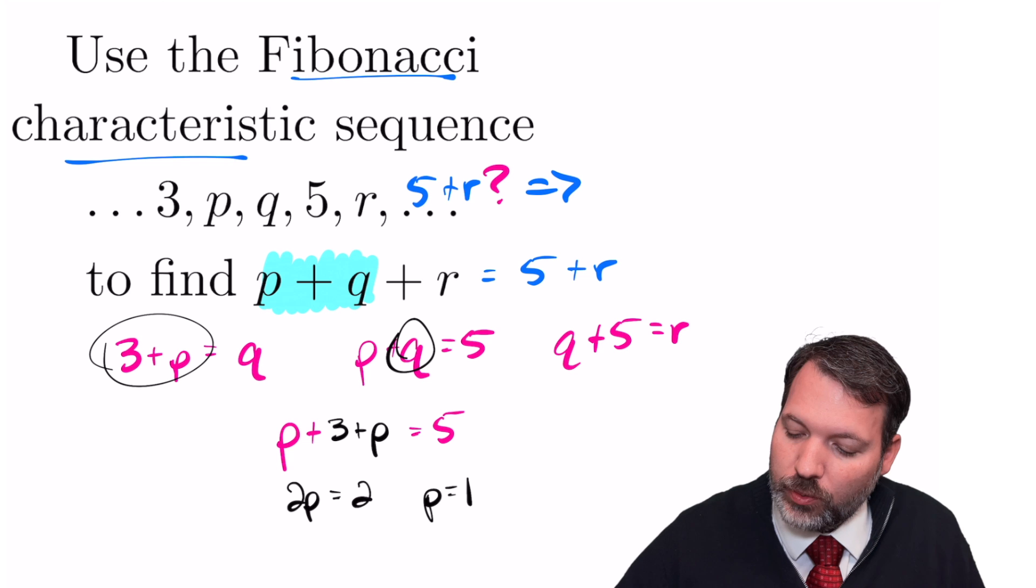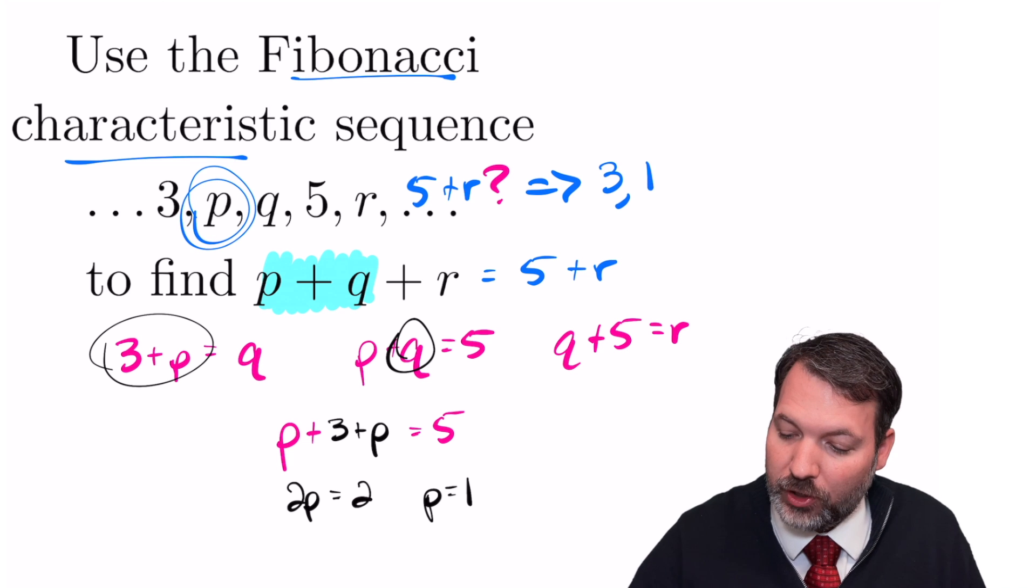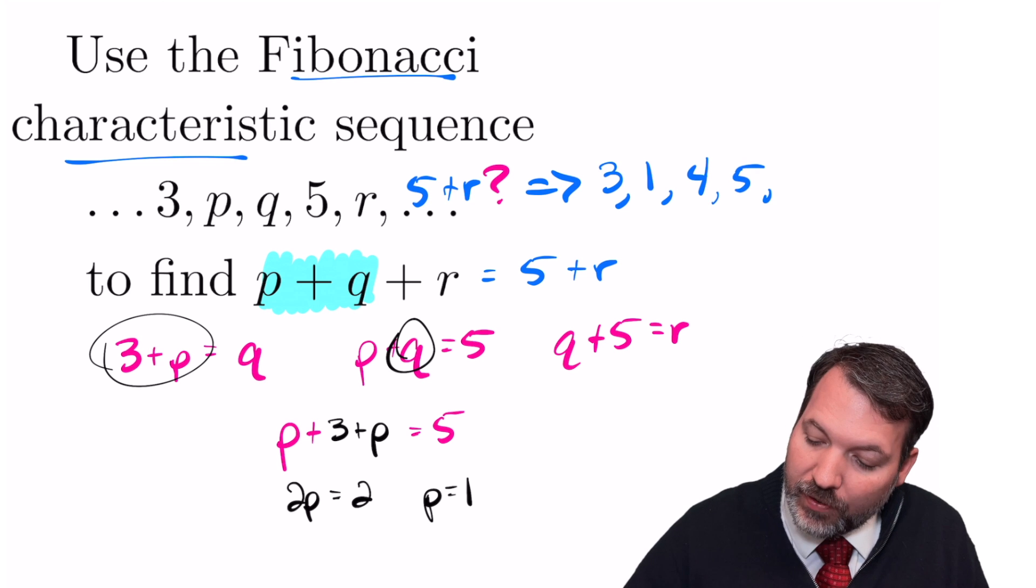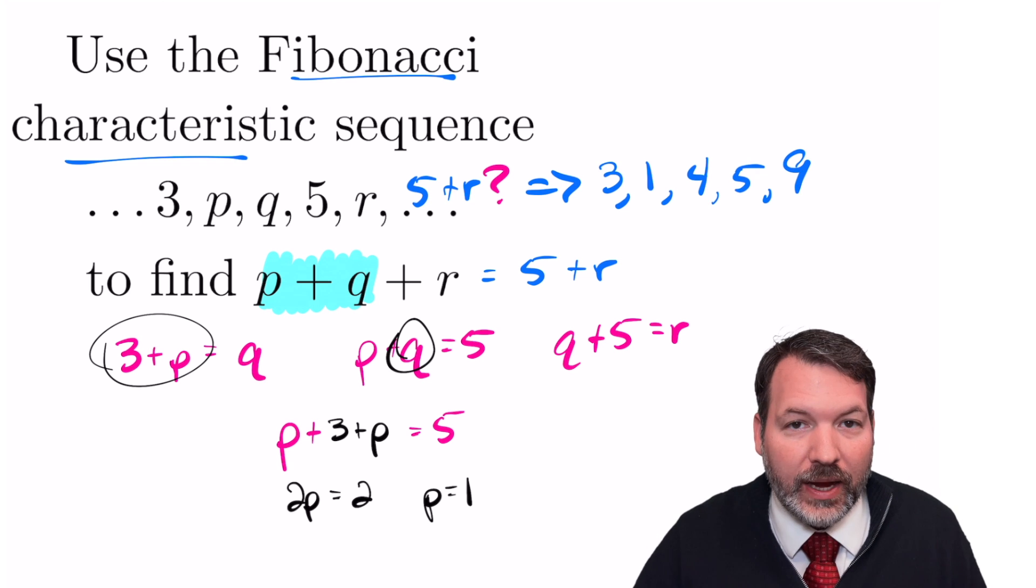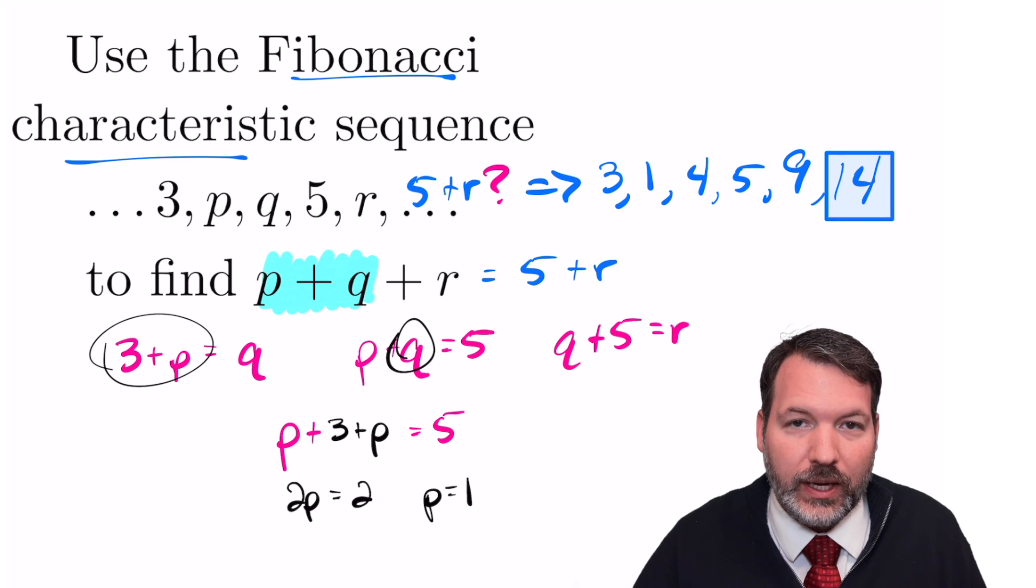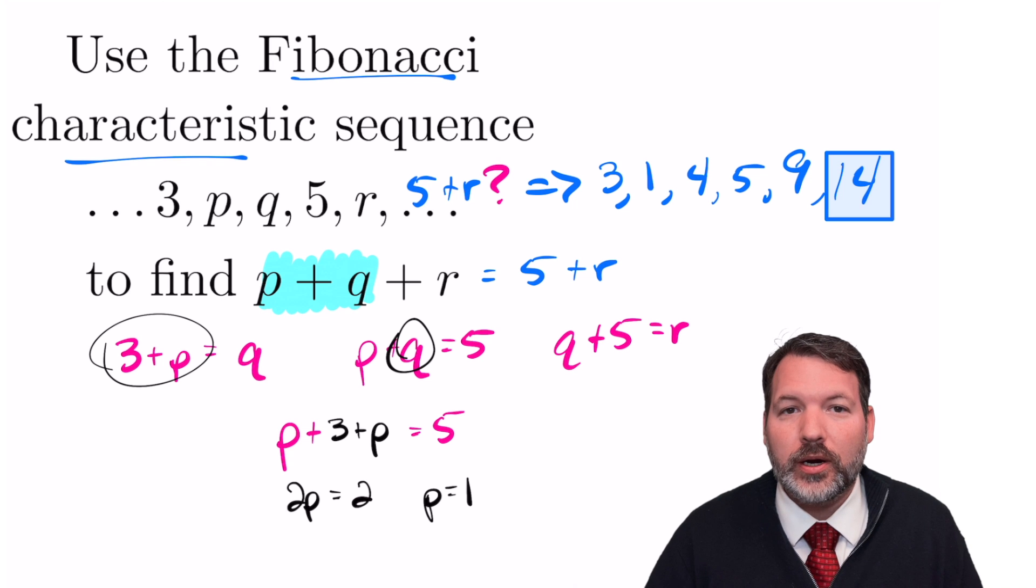At this point, we can plug that into the sequence and see, all right, so we've got 3 and then 1 because we just figured out p is 1, which means the next term must be 4 and then 5. 4 and 5 makes 9, so that's r. And then finally, the term we're actually interested in, 5 plus 9 makes 14. And so the answer to this question, the value of p plus q plus r is 14.